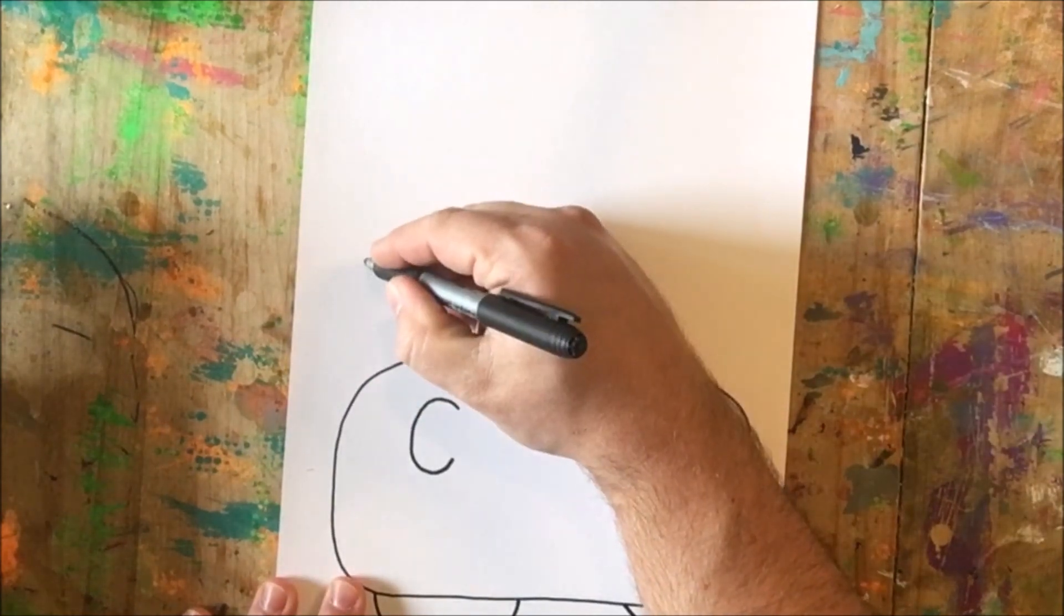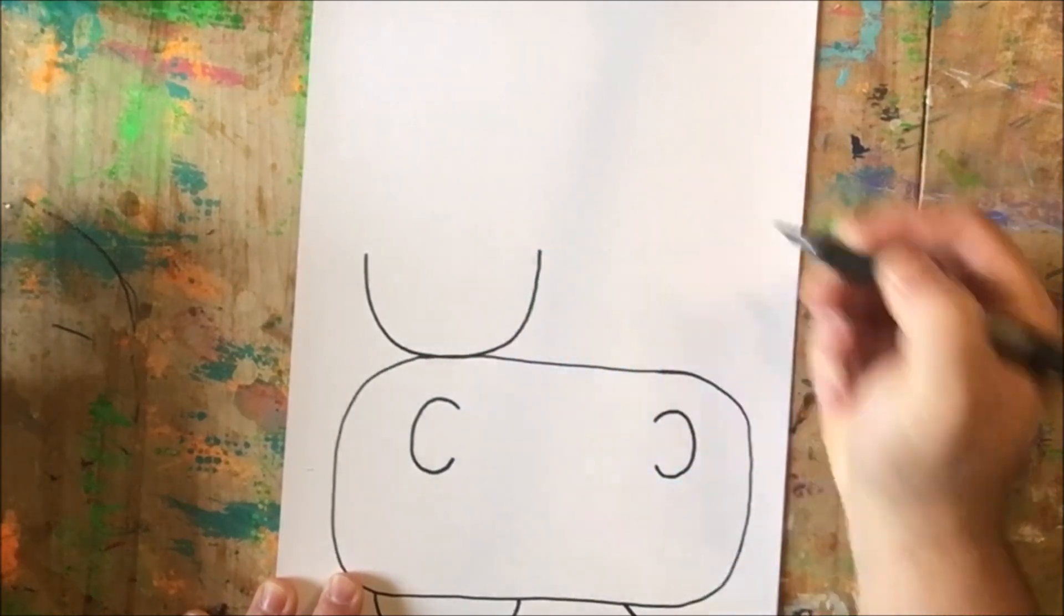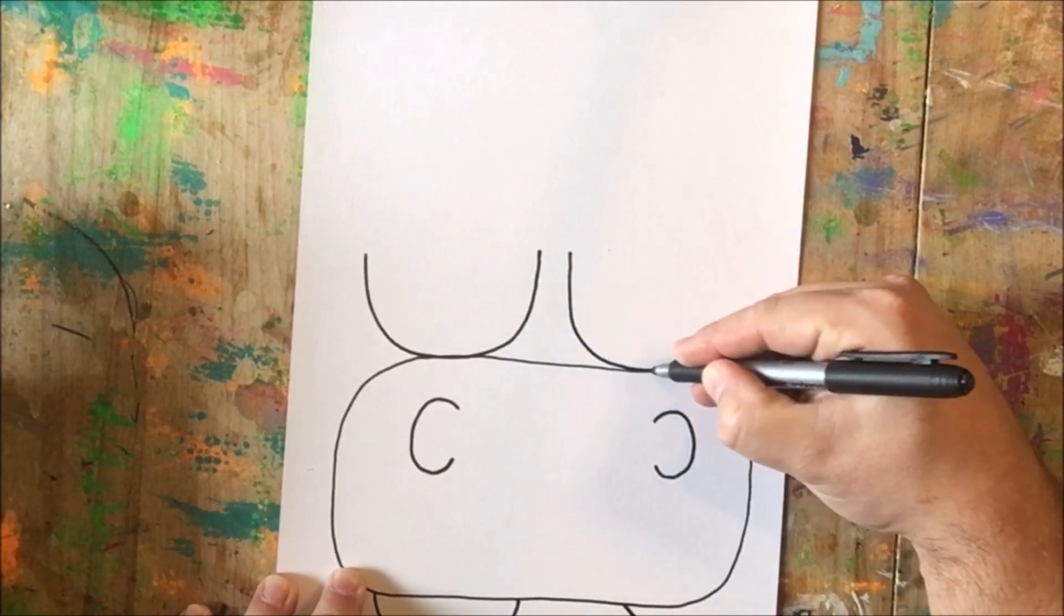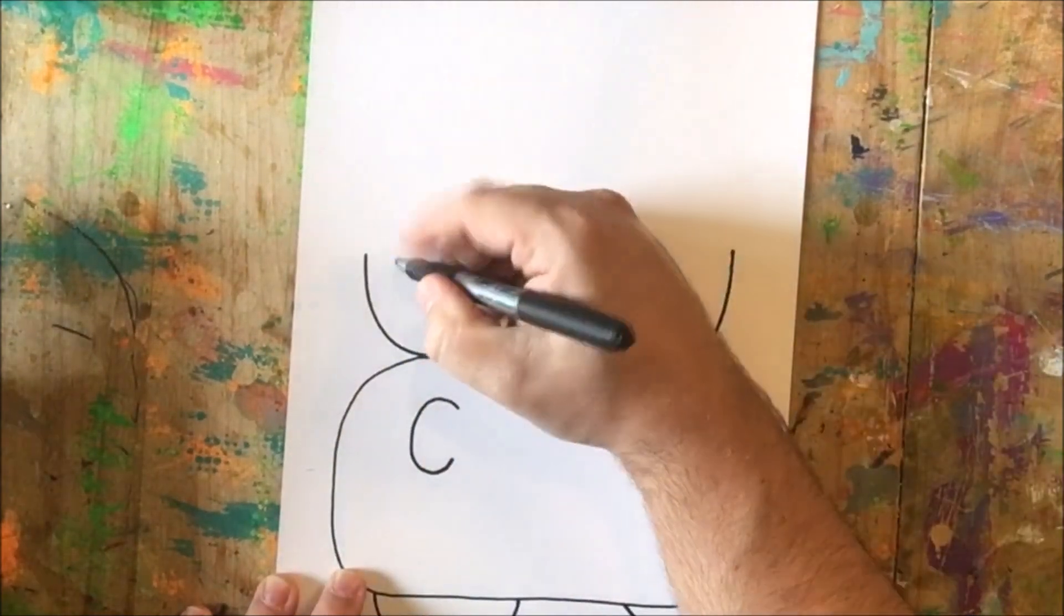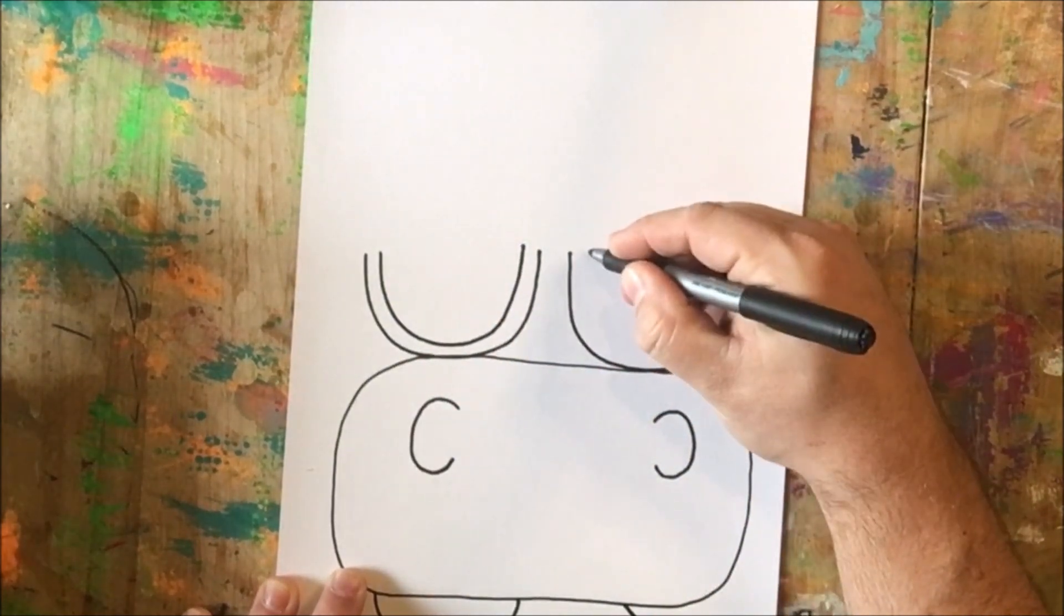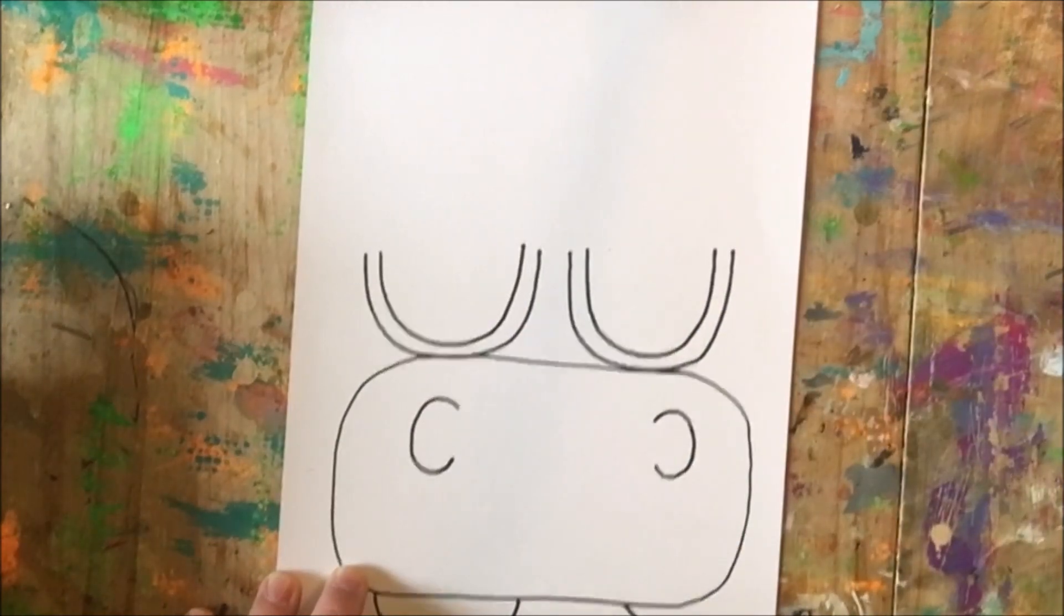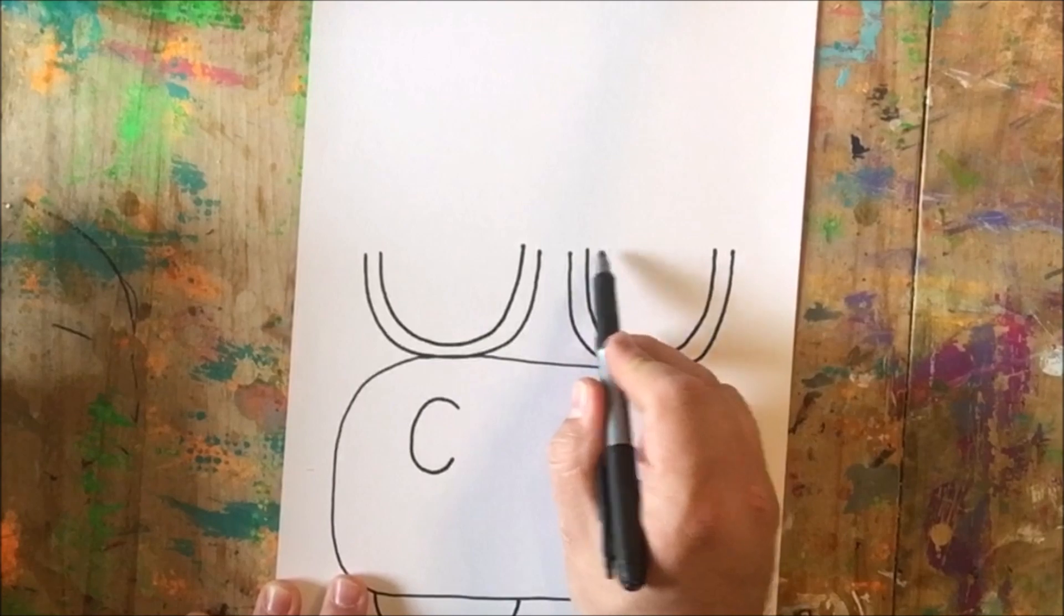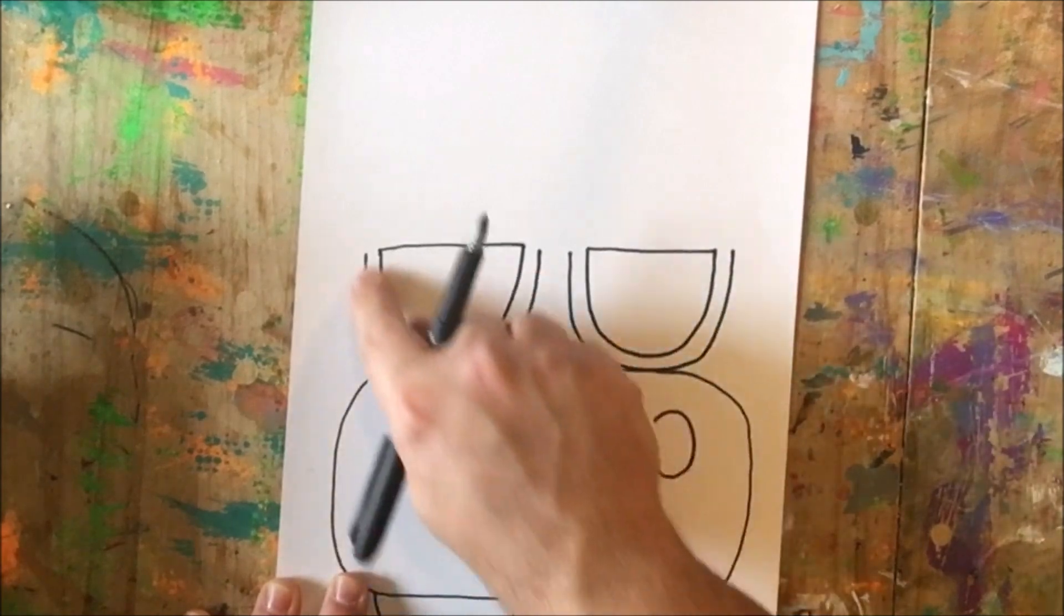The next thing I'm going to do is draw a smile shape or a U shape, and I'm going to repeat that U shape right over here. Now, inside of that U shape, I'm going to draw another U shape. These are going to be the sunglasses for our cow. I'm going to connect the two ends of the inside U, but not the outside U. These are going to be the lenses, and this is going to be the frame around the outside.